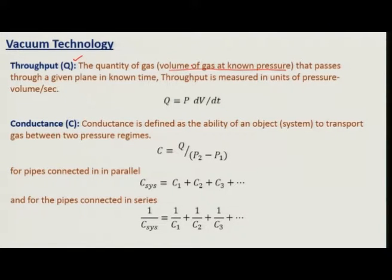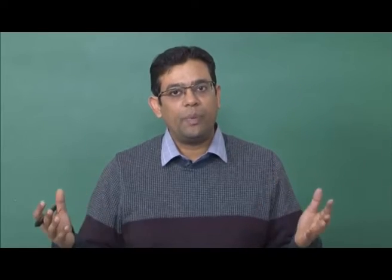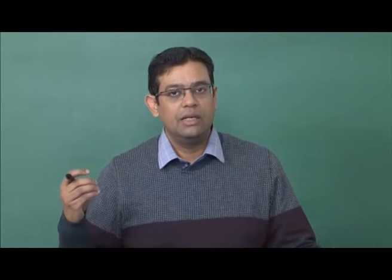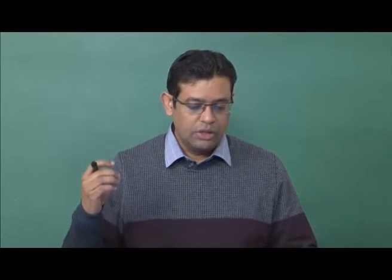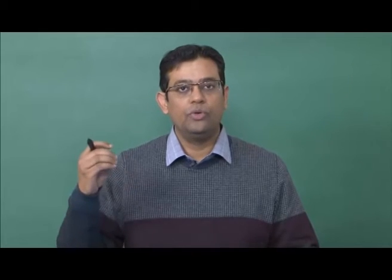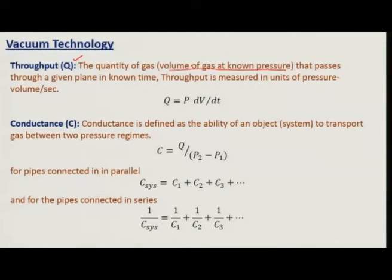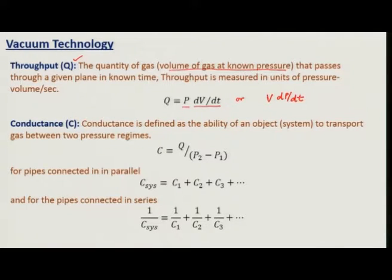Why volume at known pressure? Because gas will occupy any volume you keep it in, so volume alone is not the exact measure of the quantity of gas. P times V is the quantity of gas. So throughput can be defined as Q equals change in volume at a fixed pressure, or equivalently as constant volume times dP/dt. This is the throughput.